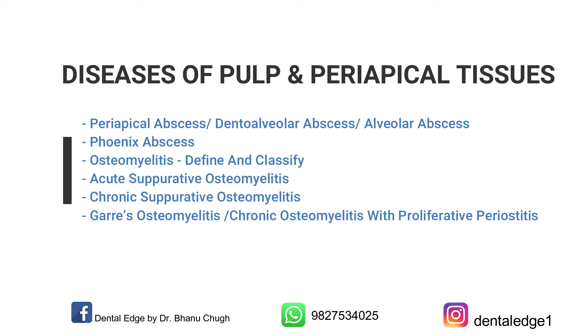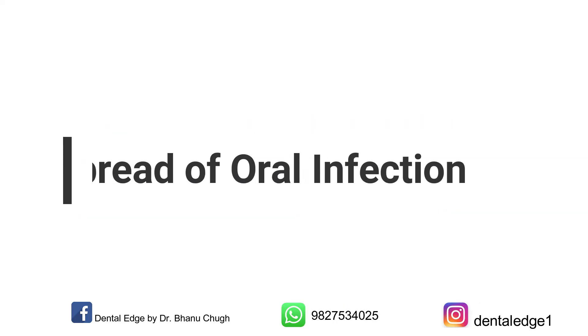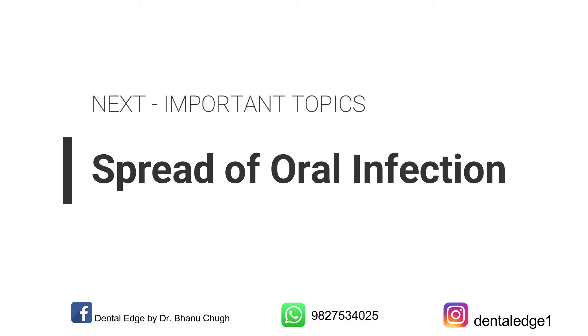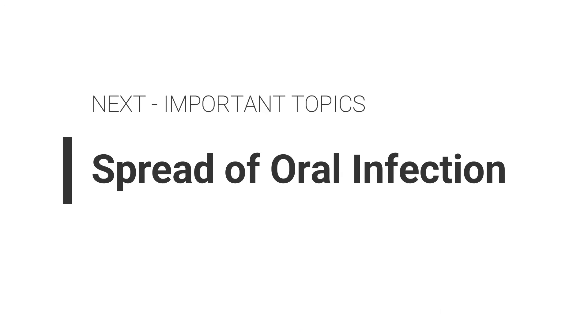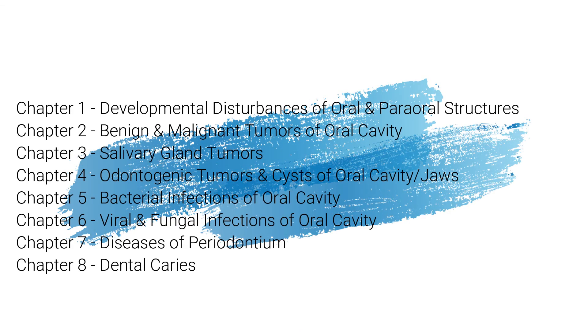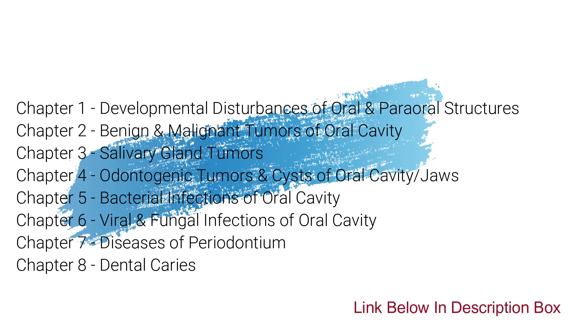So we are done with important topics from diseases of pulp and periapical tissues. In the next video I'll be covering important topics from spread of oral infections. I have already uploaded videos on important topics from eight chapters, as you can see on the screen. You can check them as well — the links are in the description box and also on the screen.